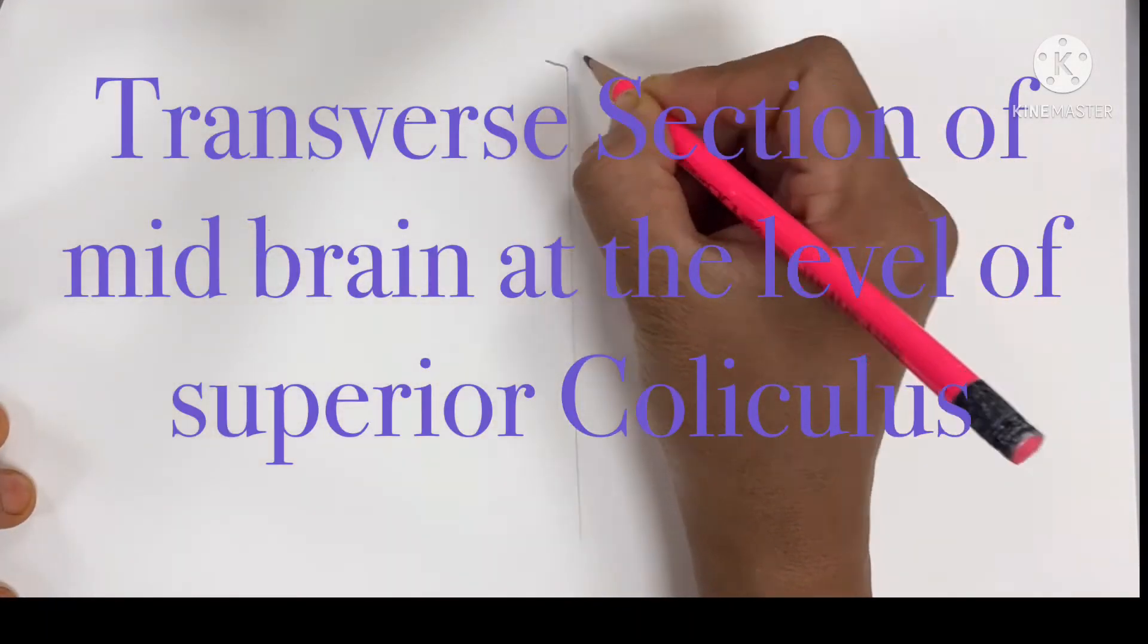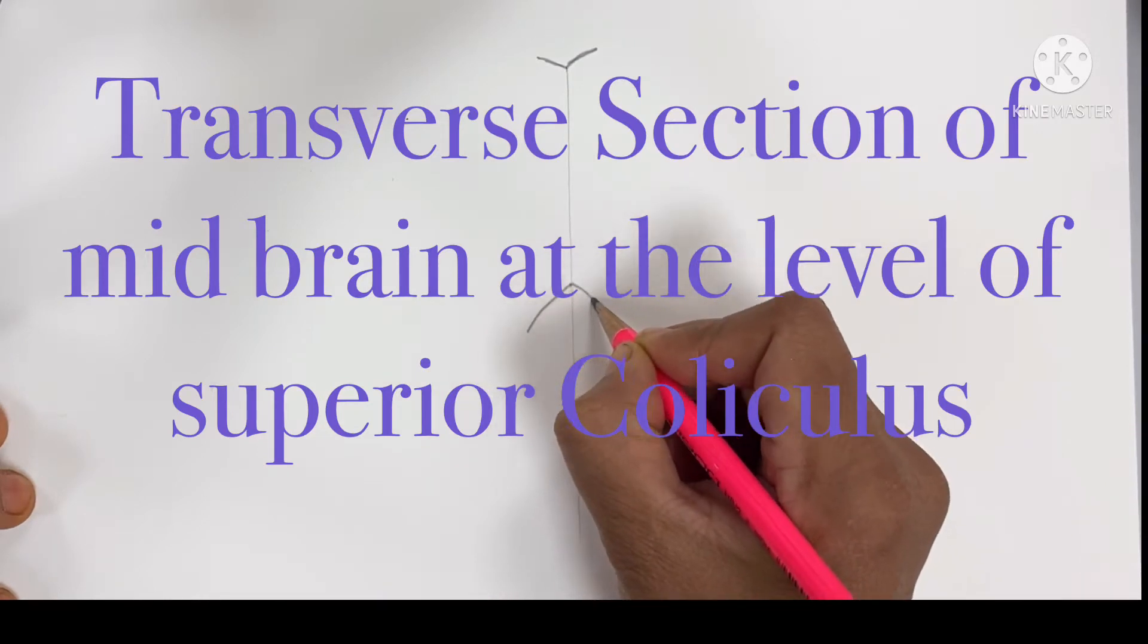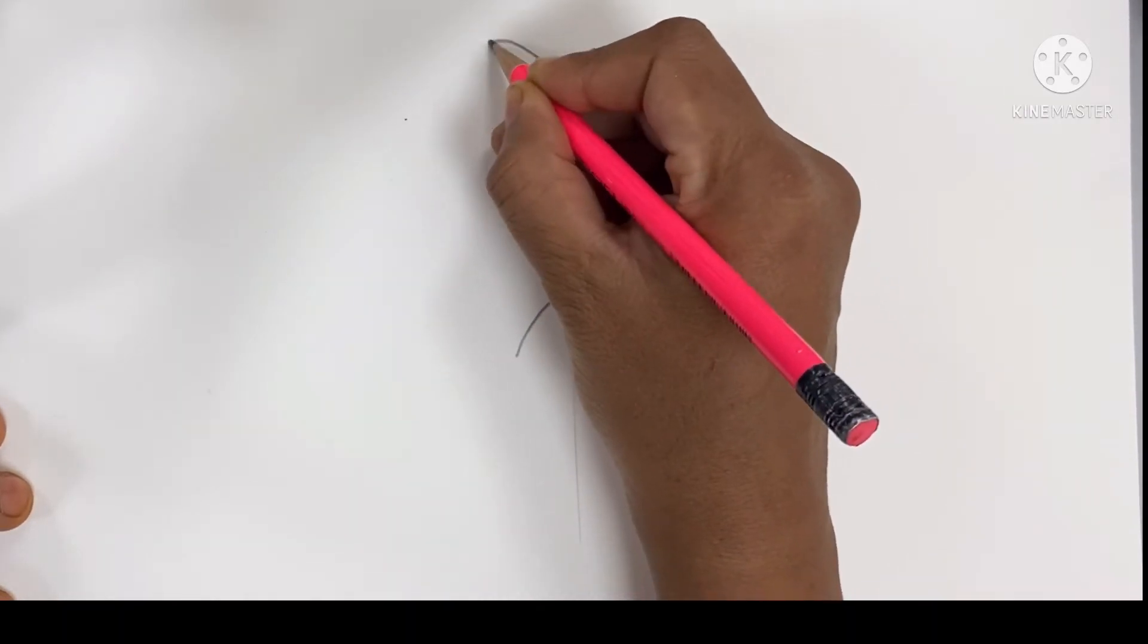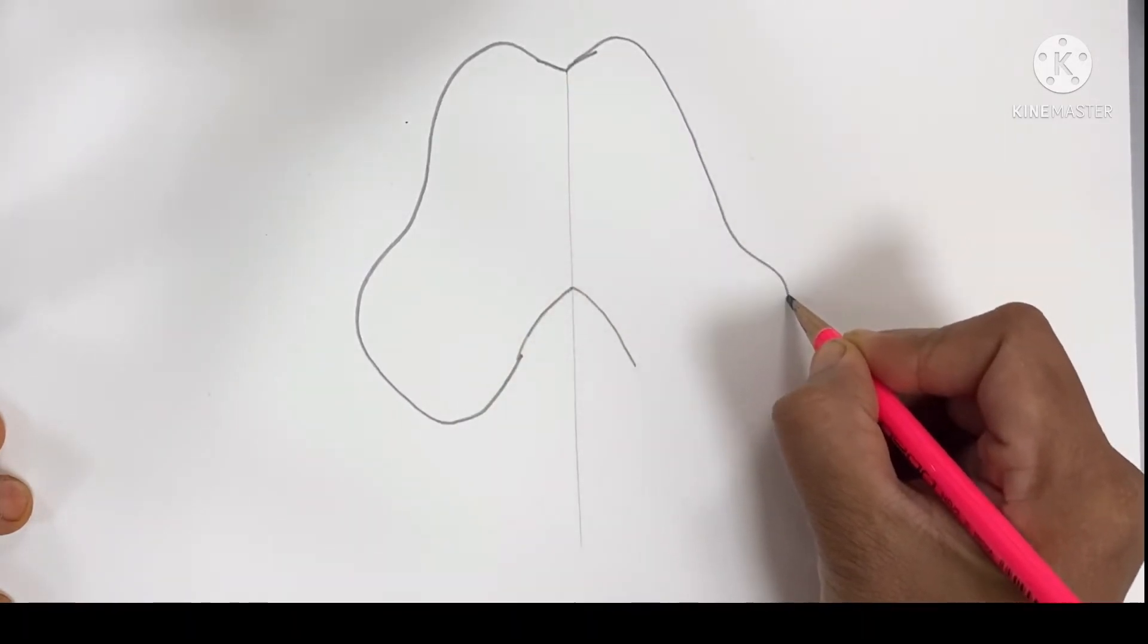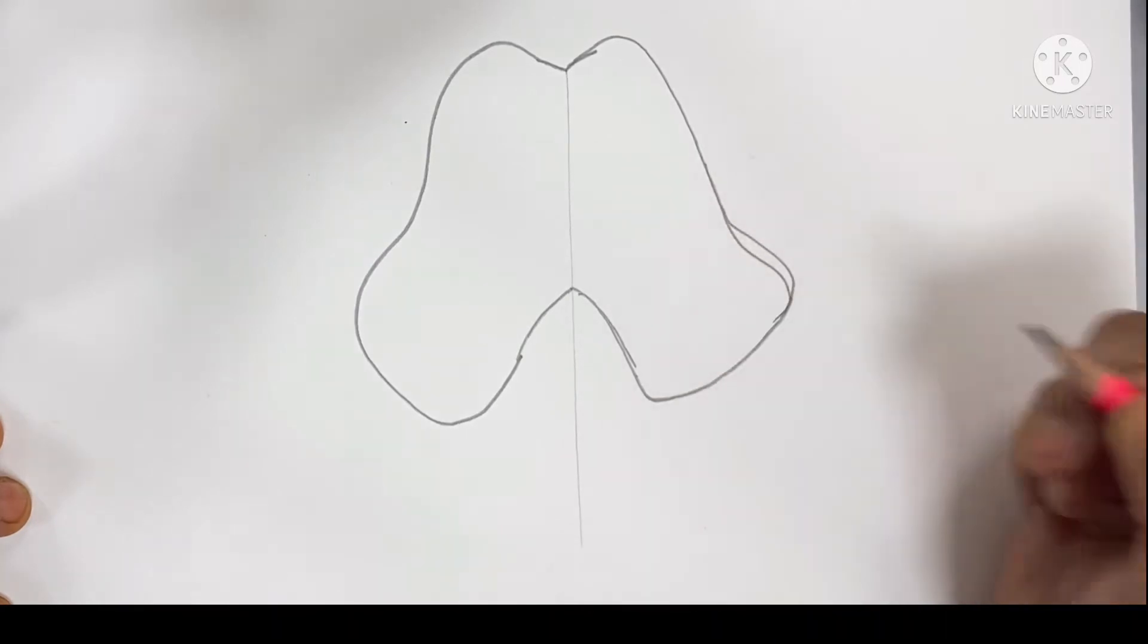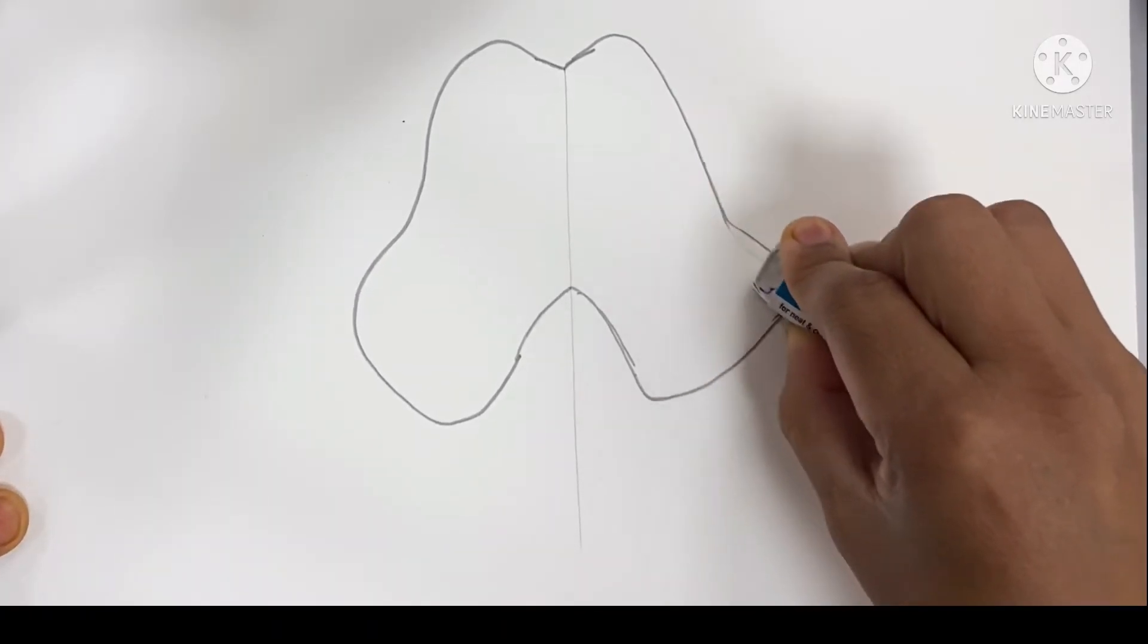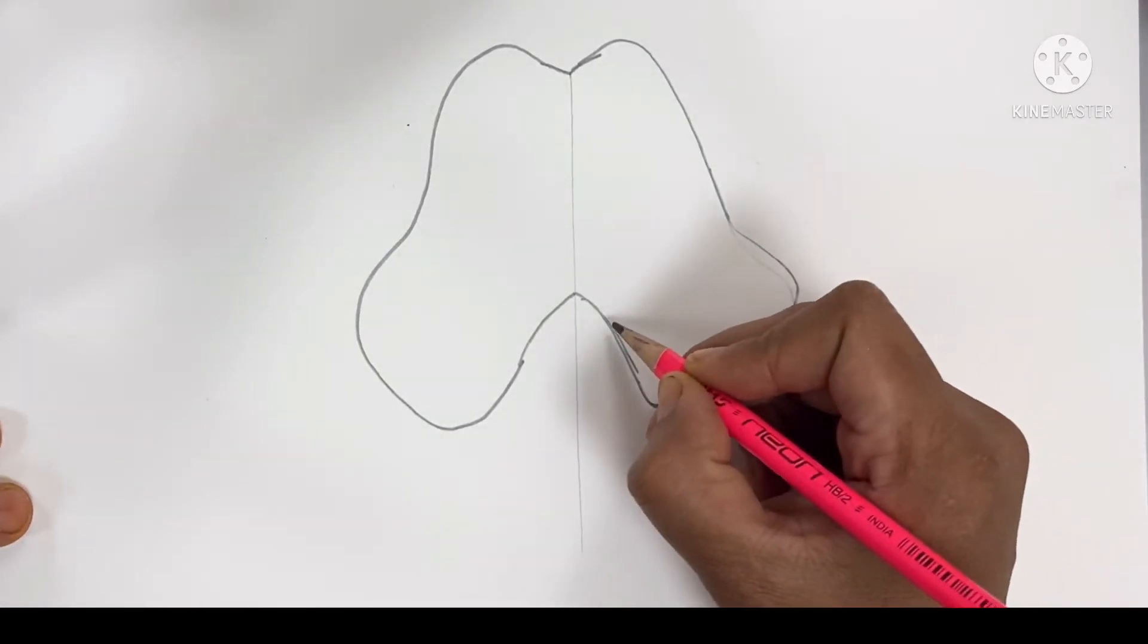This is a transverse section of the midbrain at the level of superior colliculus. The midbrain is the upper and short part of the brainstem, 2.5 centimeters long and 2.5 centimeters wide. It develops from the mesencephalon and this part remains narrow.